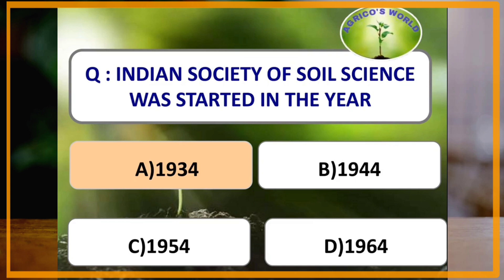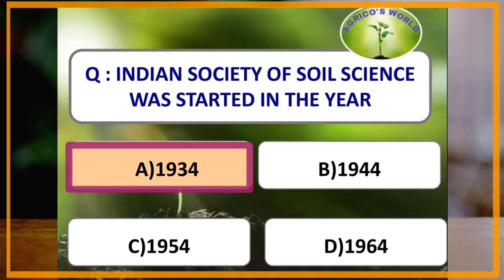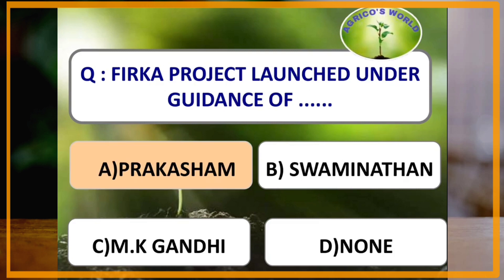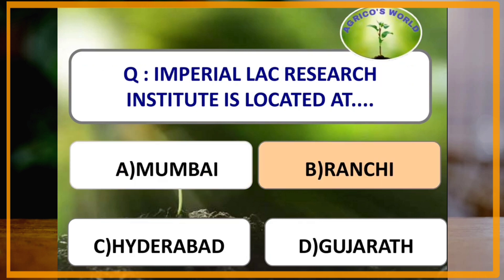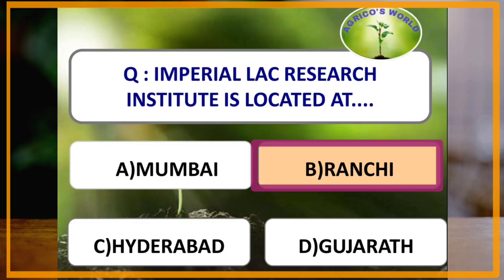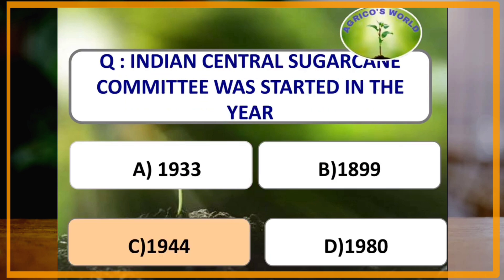Indian Society of Soil Science was started in the year 1934. Firca Project was launched under the guidance of Prakasham in the year 1946. Imperial LAC Research Institute is located at Ranchi. Indian Central Sugarcane Committee was started in which year? The answer is 1944.